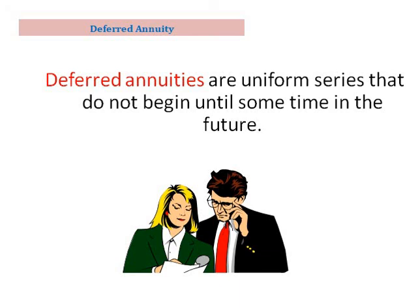Welcome to the second part of the annuity lecture. Today we will address a special case of annuities — deferred annuities. What is a deferred annuity? It is a uniform series of payments that do not begin until some time elapses in the future. With a regular annuity, payments start from year 1. However, with a deferred annuity, the annuity may begin at year 5 and continue as a uniform series — maybe 4 or 5 payments. Let's see how it looks on a cash flow diagram.